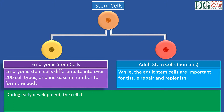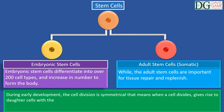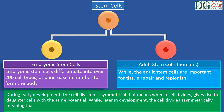During early development, the cell division is symmetrical. That means that when a cell divides, it gives rise to daughter cells with the same potential. While later in development, the cell divides asymmetrically, meaning that the daughter cells produced include a stem cell and a more differentiated cell.